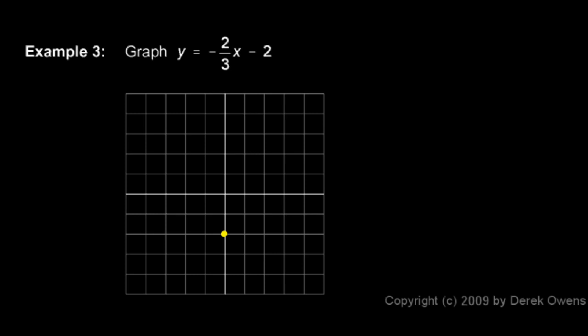Well, if you think of the slope as the rise over the run, that's going to be negative 2 over 3. So the rise is negative 2. That means we go down 2 and then over 3, and that puts us here.